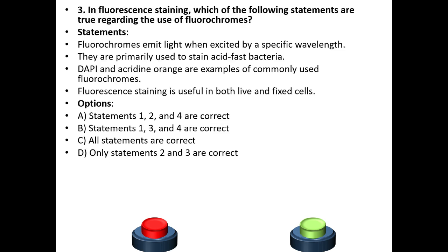Third question. In fluorescent staining, which of the following statements are true regarding the use of fluorochromes? Statements: Fluorochromes emit light when excited by a specific wavelength. They are primarily used to stain acid-fast bacteria. DAPI and Acridine Orange are examples of commonly used fluorochromes. Fluorochrome staining is useful in both live and fixed cells.